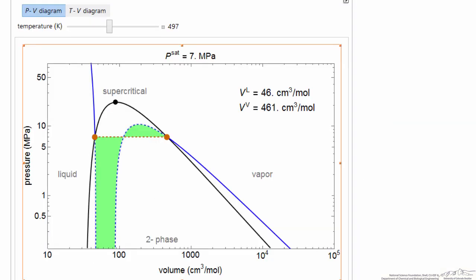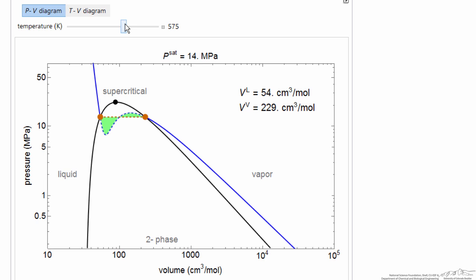So here's the interactive simulation looking at the pressure volume diagram. As I change the temperature, the isotherm moves up, vapor-liquid equilibrium moves to higher pressure. Again, these green areas on a linear plot of pressure versus volume would be the same size area.